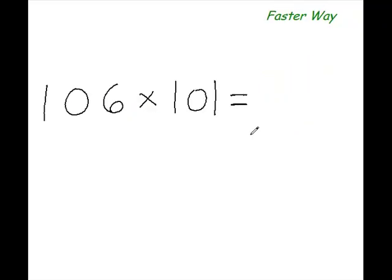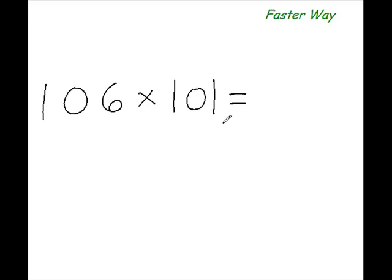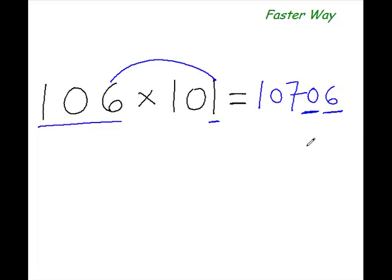Now using the same logic, can you tell me what would be 106 times 101? So once again, add this one to this entire number. 106 plus 1 is 107, and we get the first three digits of our answer. Now two more to go. So 6 times 1 is 6. So we put 0, 6 here. That is our answer, 10,706. As simple as that.